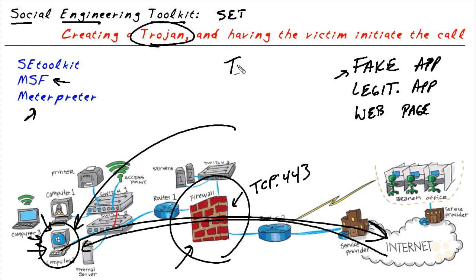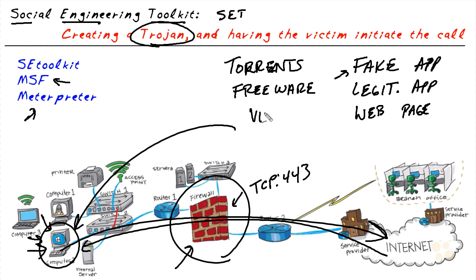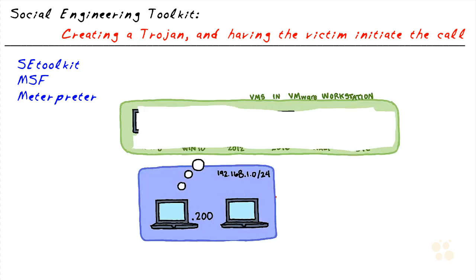If people are using torrents or downloading illegal software, it's very likely a lot of that software has extra payloads as part of it. Freeware is also something to be concerned with — if it's free, why are they doing it? And of course, a virus or worm could deploy the Trojan as part of its work as well.